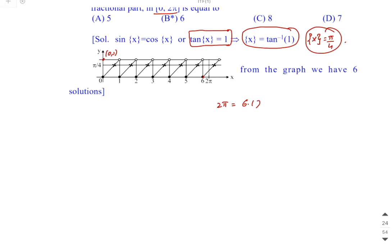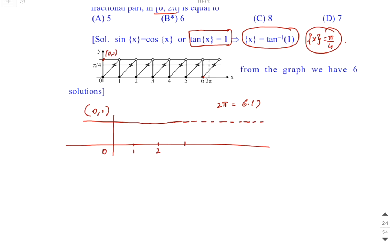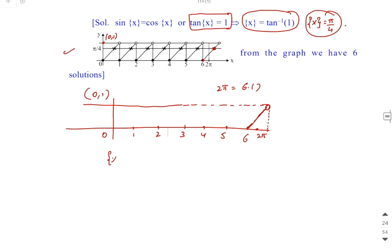If we talk about the interval 0 to 2pi, in this region the fractional part x graph repeats. The graph goes from 0 to 1 for segments 0,1,2,3,4,5 and 6. The solution repeats after 2pi. The fractional part x graph must be compared to the value pi by 4.